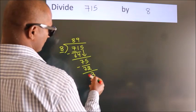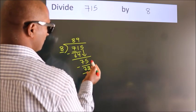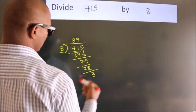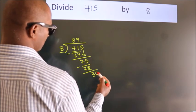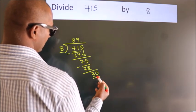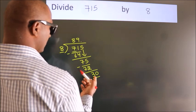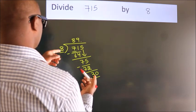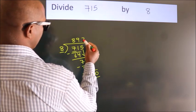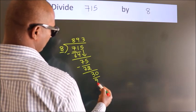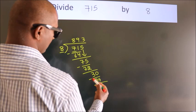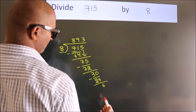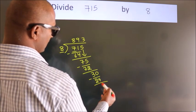After this, no more numbers to bring down. So what we do is put a dot and take 0, making 30. A number close to 30 in the 8 table is 8 times 3 equals 24. Now we subtract and get 6.